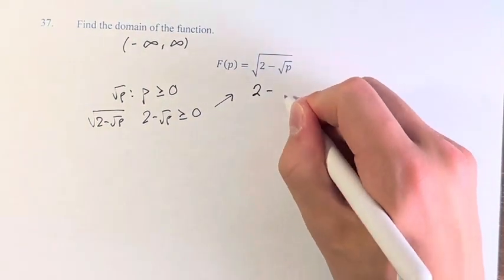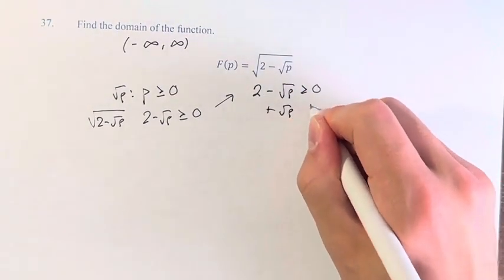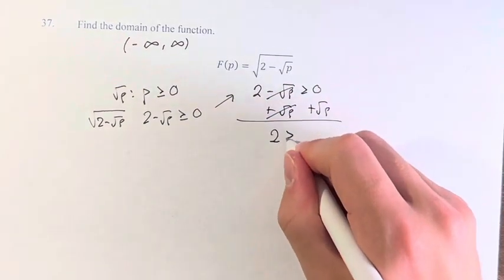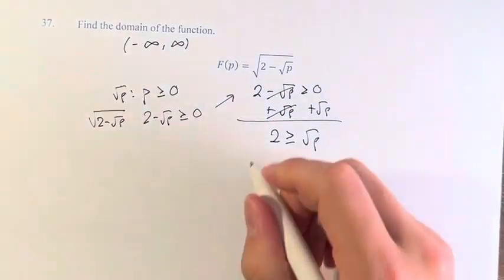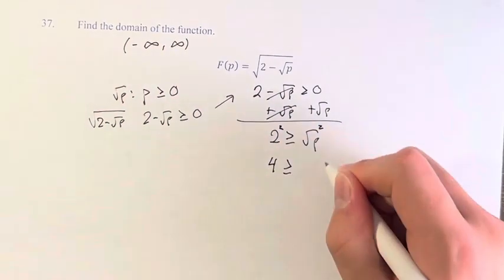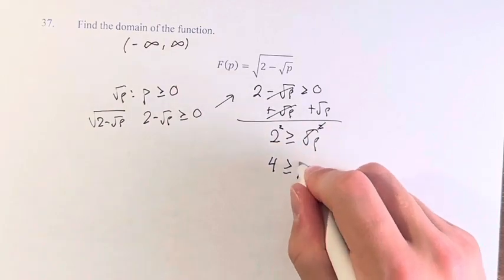We can solve this: 2 minus the square root of p is greater than or equal to 0. Adding the square root of p to both sides, these cancel, and we're left with 2 is greater than or equal to the square root of p. Squaring both sides, 2 squared is 4, is greater than or equal to the square root of p squared. The square root of anything squared is just itself.